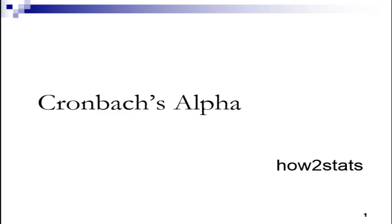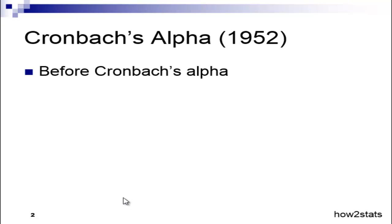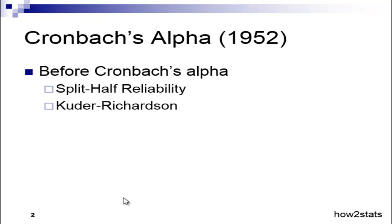In this video, I'm going to explain what Cronbach's alpha is. Cronbach's alpha is a psychometric statistic that was introduced by Cronbach in 1952. Before it was introduced, there was a split-half reliability estimate that was actually very similar to Cronbach's alpha, but it was limited in that you had to choose what split-half, and different split-halves gave different estimates of internal consistency.